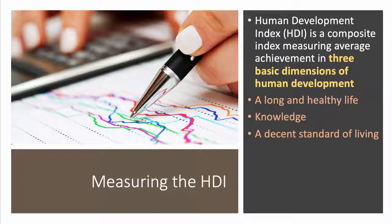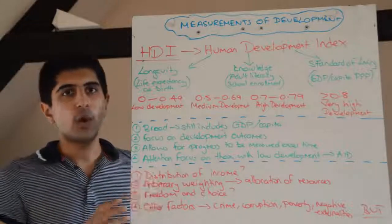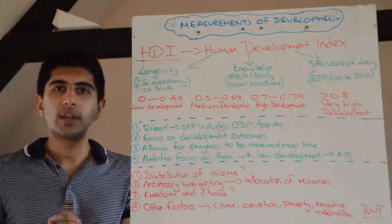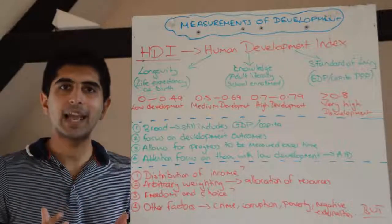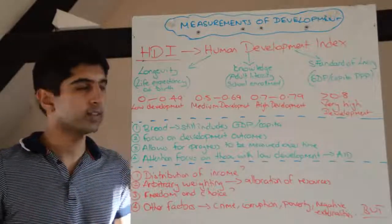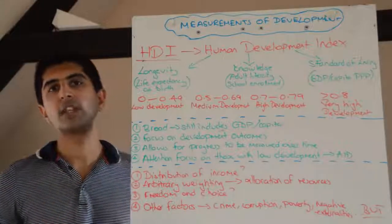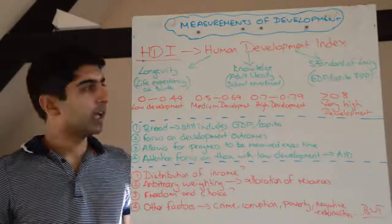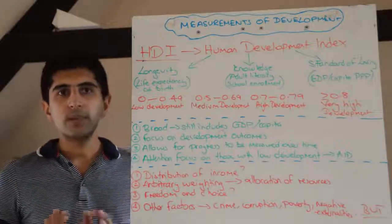The index does not take into account several factors, such as the net wealth per capita or the relative quality of goods in a country. This tends to lower the ranking for some of the most advanced countries, such as the G7 members and others.